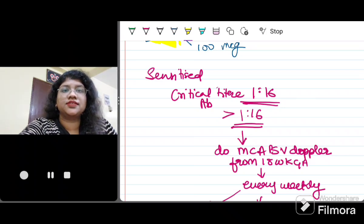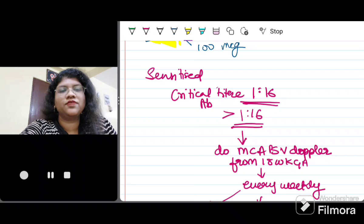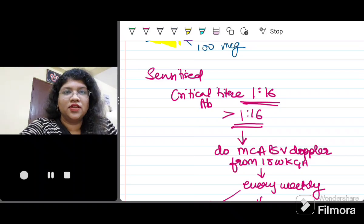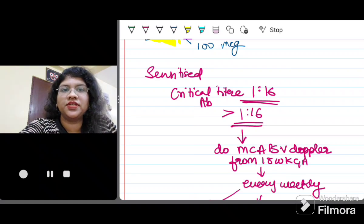Remember that this is a very very important question that has been asked even in NEET previously, that when are you going to give the postpartum prophylactic dose. So when baby's blood group is positive and DCT, that is direct Coombs test is negative, then you are going to give the dose. Direct Coombs test is done using baby's blood sample. Remember that RH negative is not an indication for cesarean section so vaginal delivery can safely be done unless there is any obstetric indication.